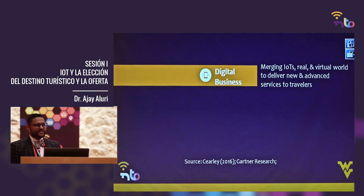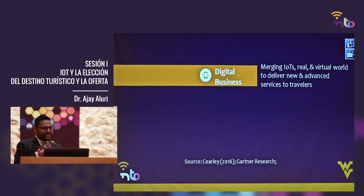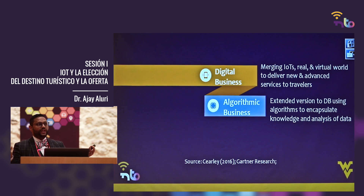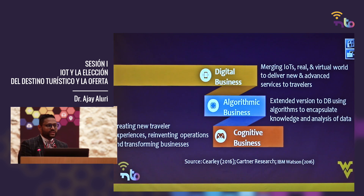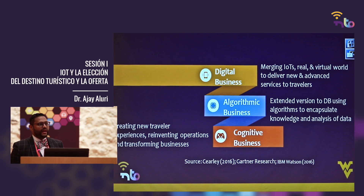When it comes to IoT, it's not just sensors and technology — it's a merging of real and virtual world to deliver new and advanced services to travelers, which we call digital business. But within the framework of digital business, there is also something we call algorithmic business — the use of machine learning, deep learning, and AI. And there's another level IBM Watson added: cognitive business — creating new traveler experiences and reinventing operations and transforming businesses. These three are the reason why we have to change the way we do things.